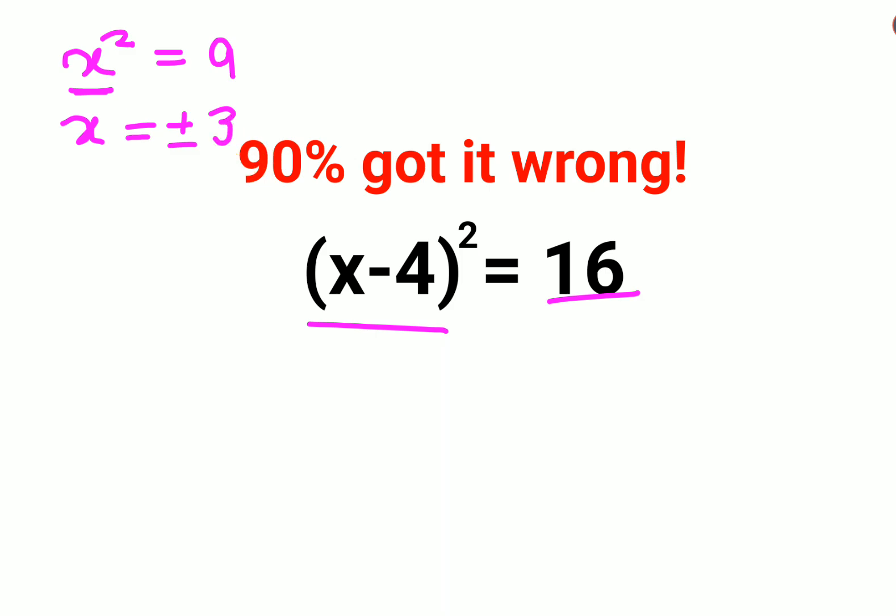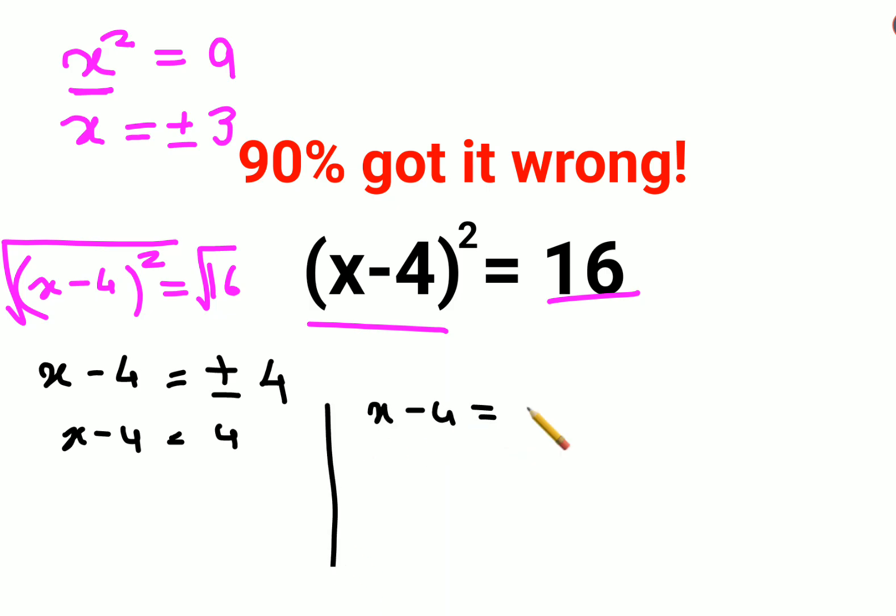So similarly here we have x minus 4 the whole square equal to 16. When I want to find the value of x, I will take roots on both sides. But since there is a variable involved, I will say x minus 4 equals to plus minus root 16 is 4. So therefore I can say either x minus 4 is equal to 4 or x minus 4 equals to minus 4.